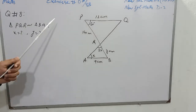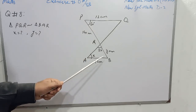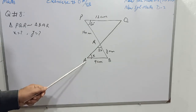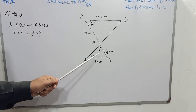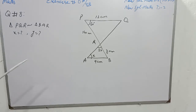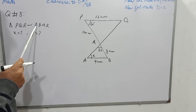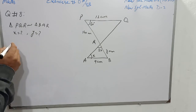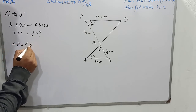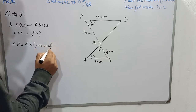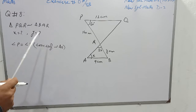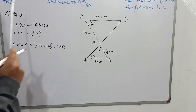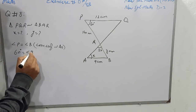Question number 8 of the same exercise: PQR is similar to BAR. There are 2 triangles in this figure, and PQR is similar to BAR. We have to find the value of X and Y. Keep in mind that if triangle PQR is similar to triangle BAR, then angle P will be equal to angle B — corresponding angles of similar triangles. The value of angle P is 60 degrees, so angle B will also be 60 degrees.